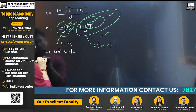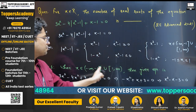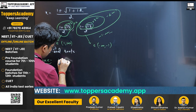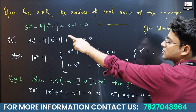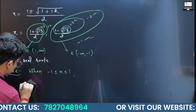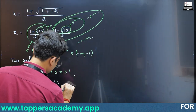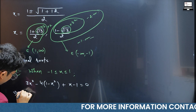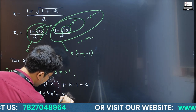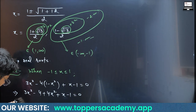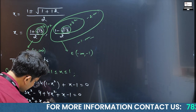Now Case 2: when x belongs to (-1, 1). The equation becomes 3x² - 4(1 - x²) + x - 1 = 0, which simplifies to 3x² + 4x² + x - 5 = 0, giving us 7x² + x - 5 = 0.